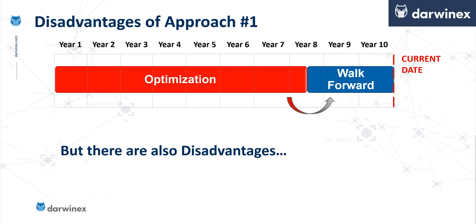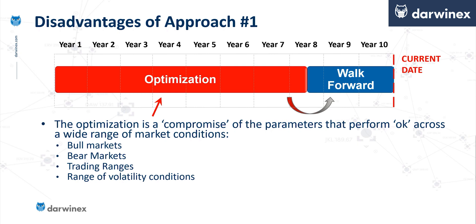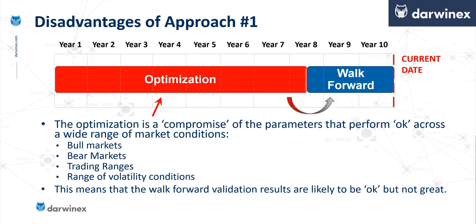But there are also a number of disadvantages with this simplistic approach. The fact that the optimization has been subject to a number of different market regimes is really a double-edged sword. On one hand, it's good because we need to make sure our system gets exposed to all of those different regimes. But the disadvantage is that the parameters that come out of the process are a compromise for all of those regimes combined. In reality, one set of parameter values would perform best in a bull market, another in a bear market, and yet another in a ranging market. When those compromise parameter values are put into our live trading account, they have a chance of performing okay in each regime, but they're unlikely to excel in any of them.